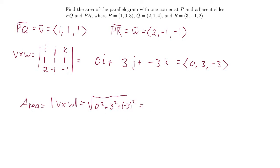0 squared is 0, 3 squared is 9, negative 3 squared is also positive 9. So this is the square root of 9 plus 9, or 18. And that's the area of the parallelogram.